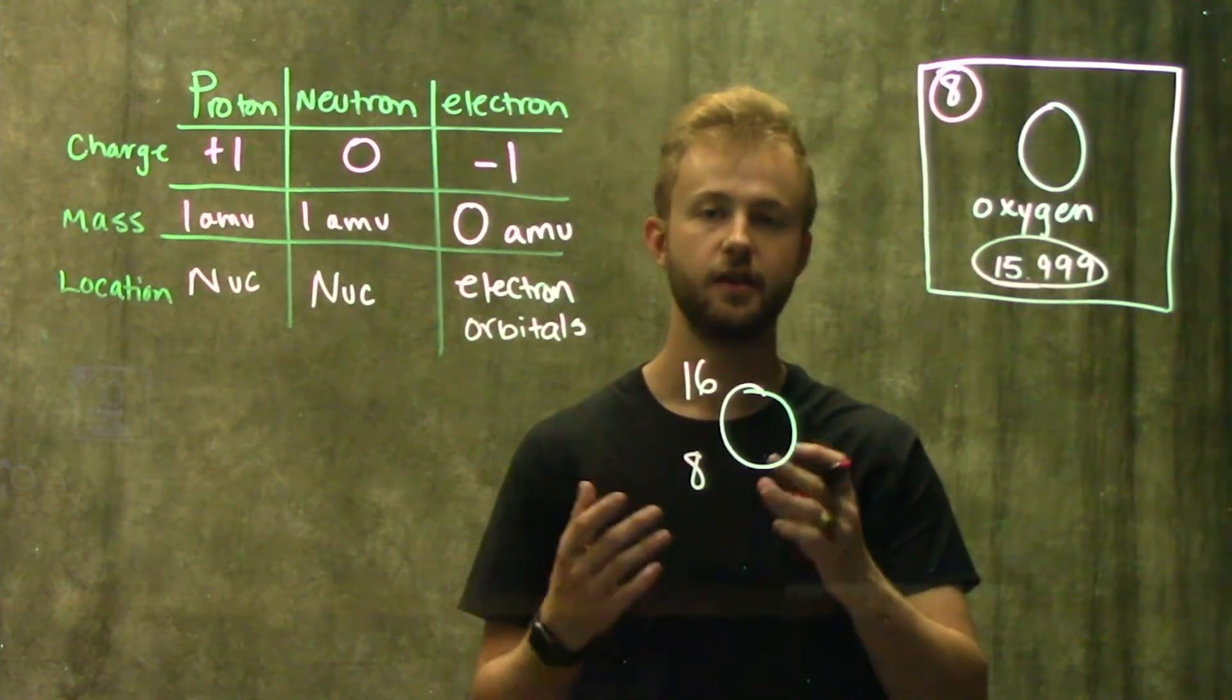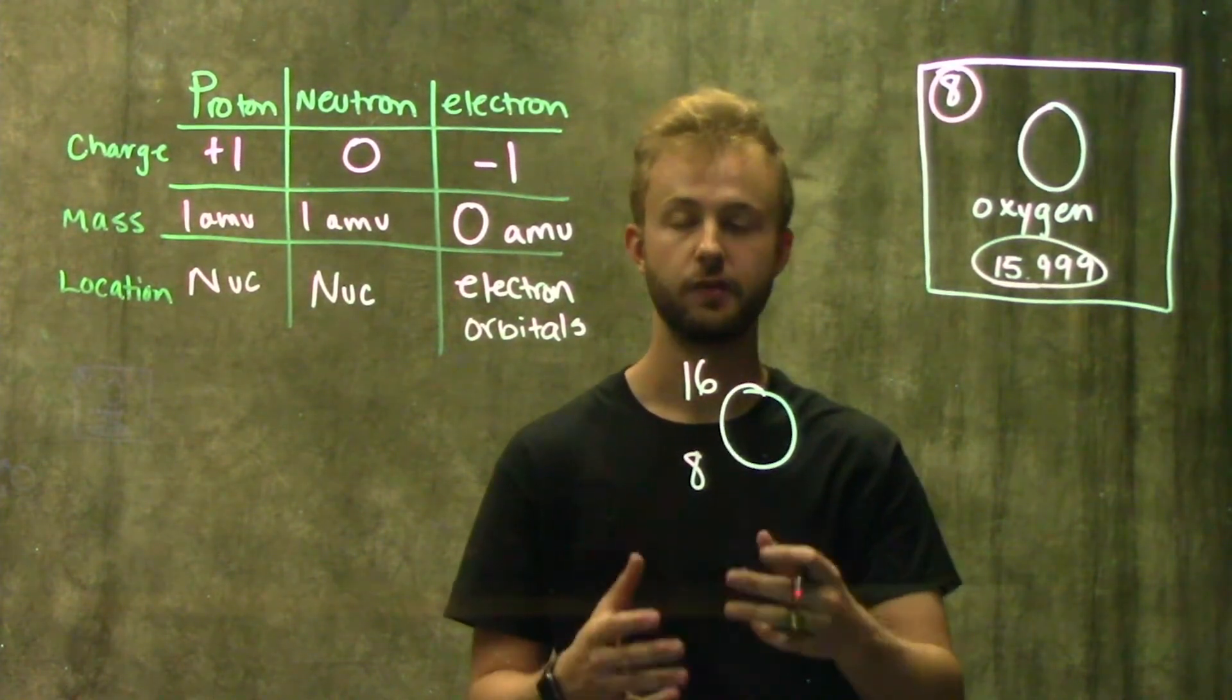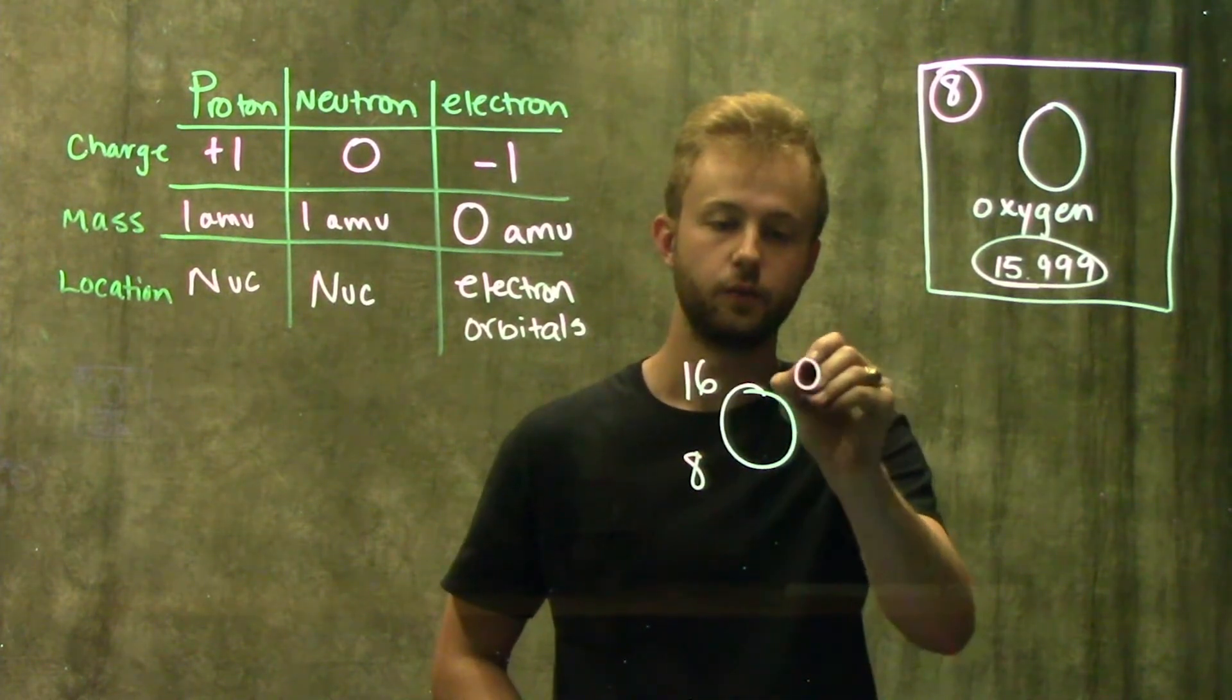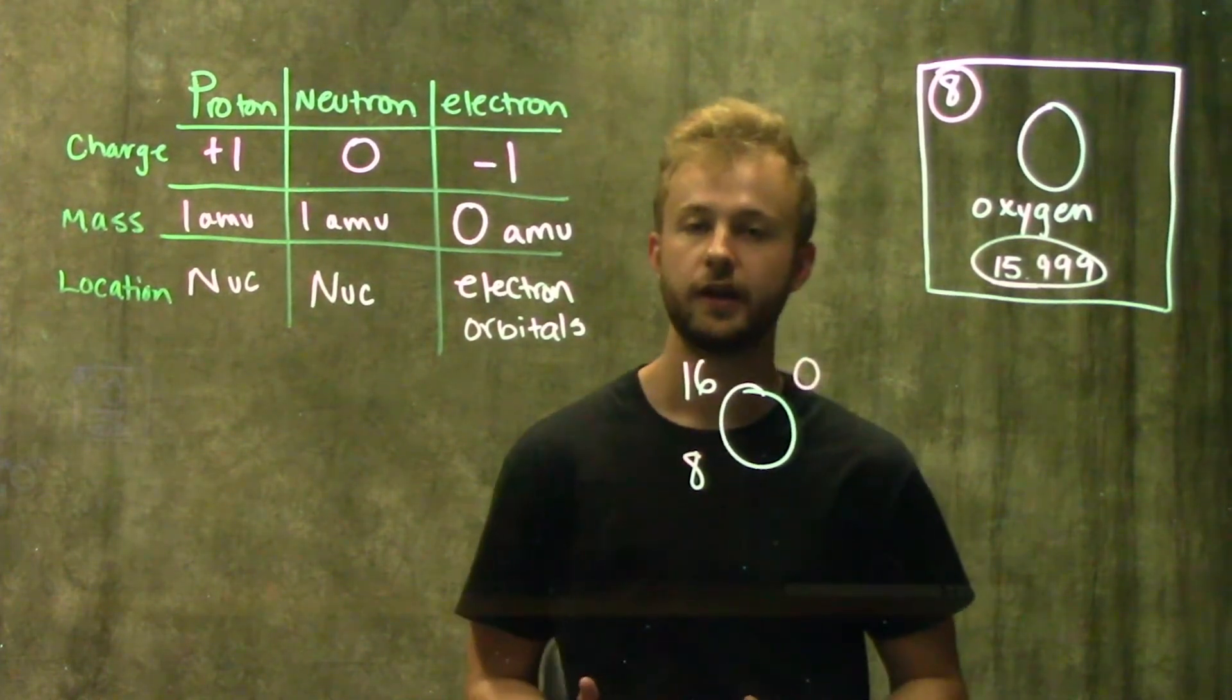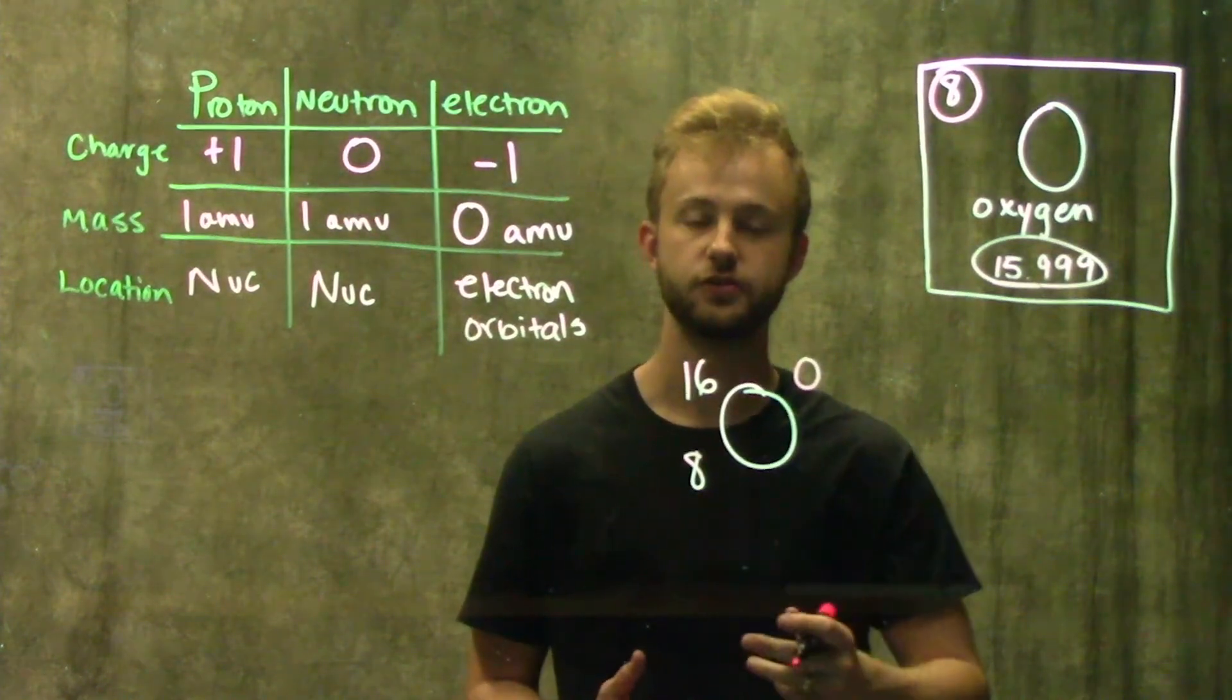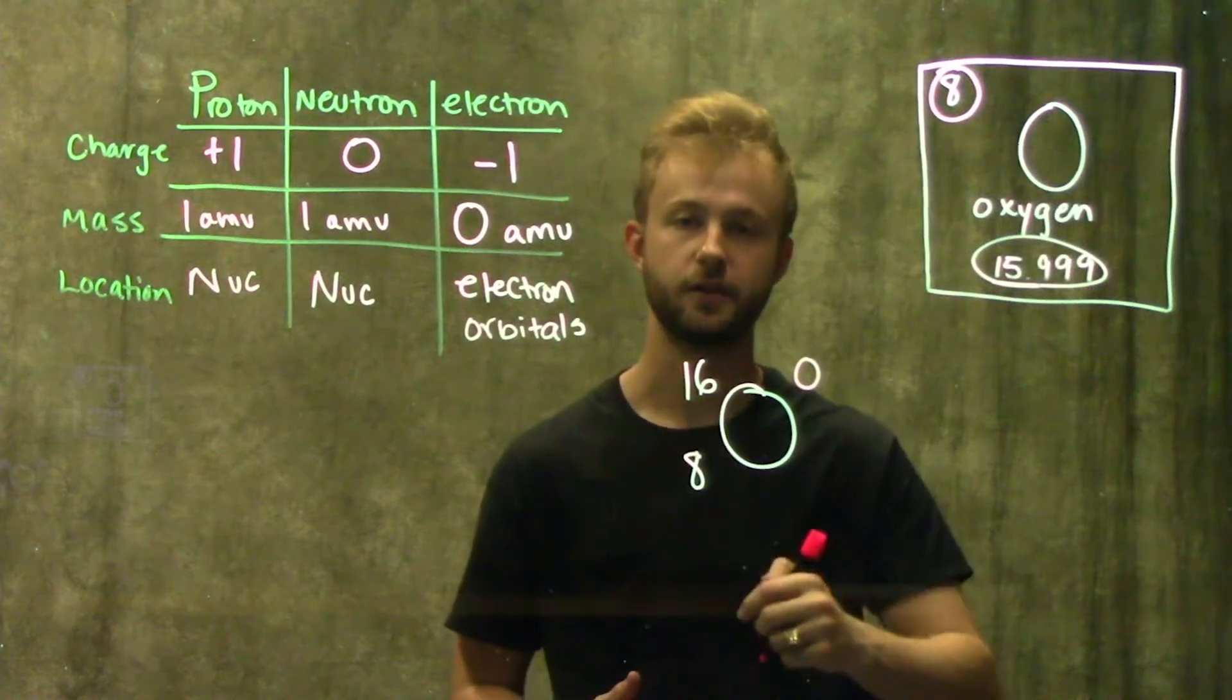So the last number that you might see when an atom is written or represented in this form is a third number right here, which would be the charge. For a neutral atom, that charge will be zero. So that normally will not show up in this notation. But if there is a charge, then it would show up right here.